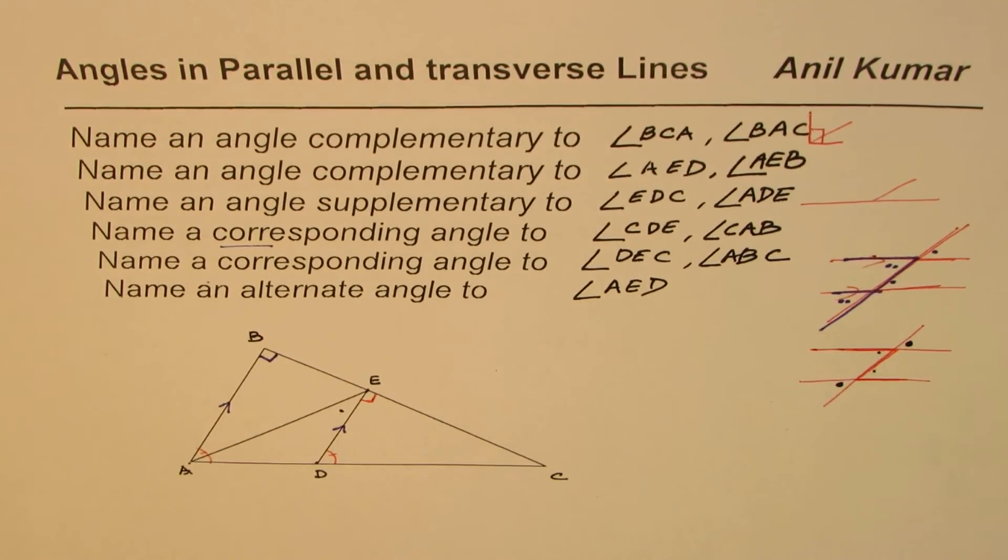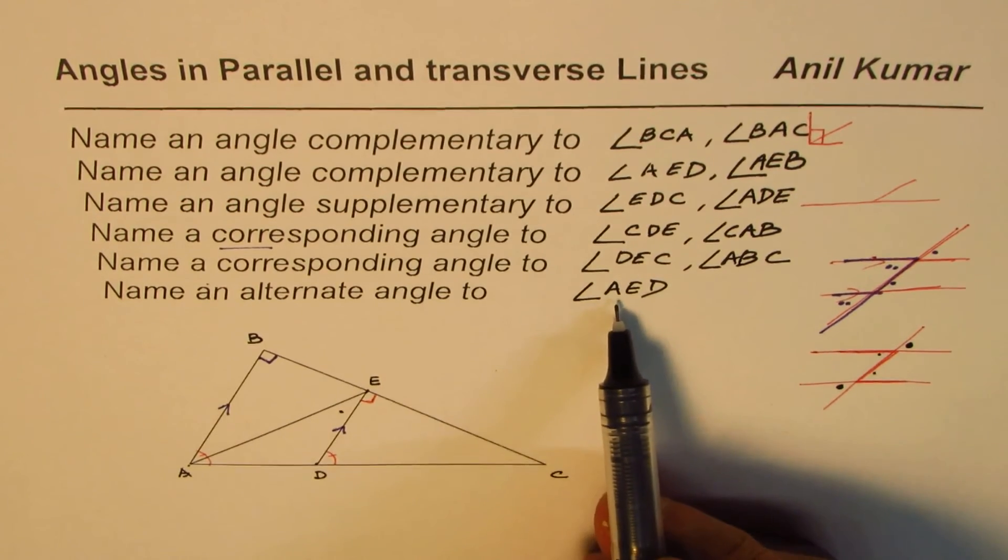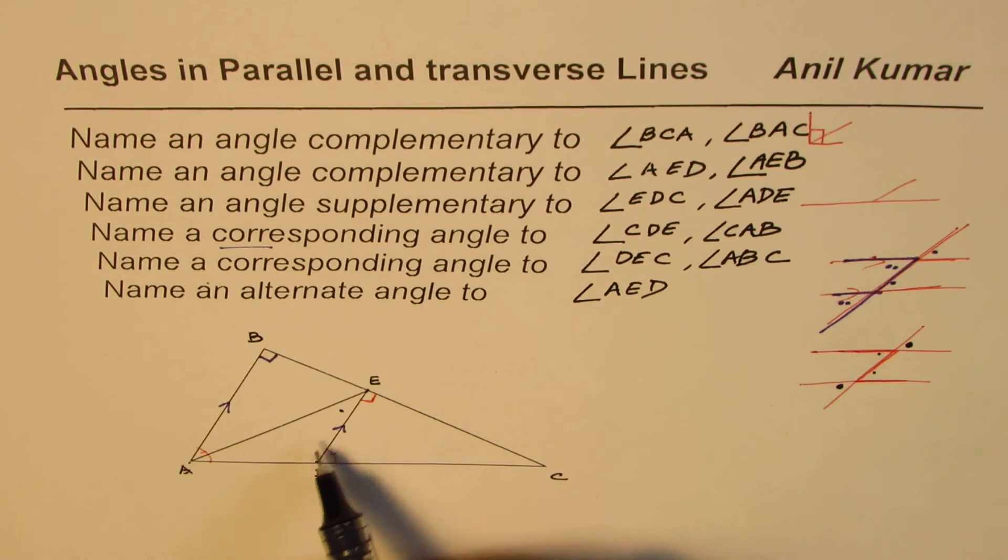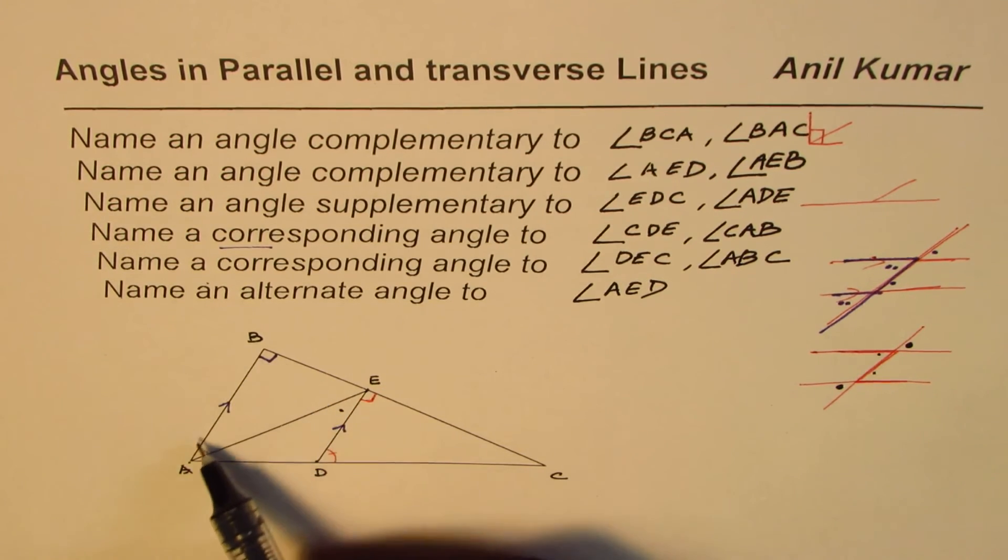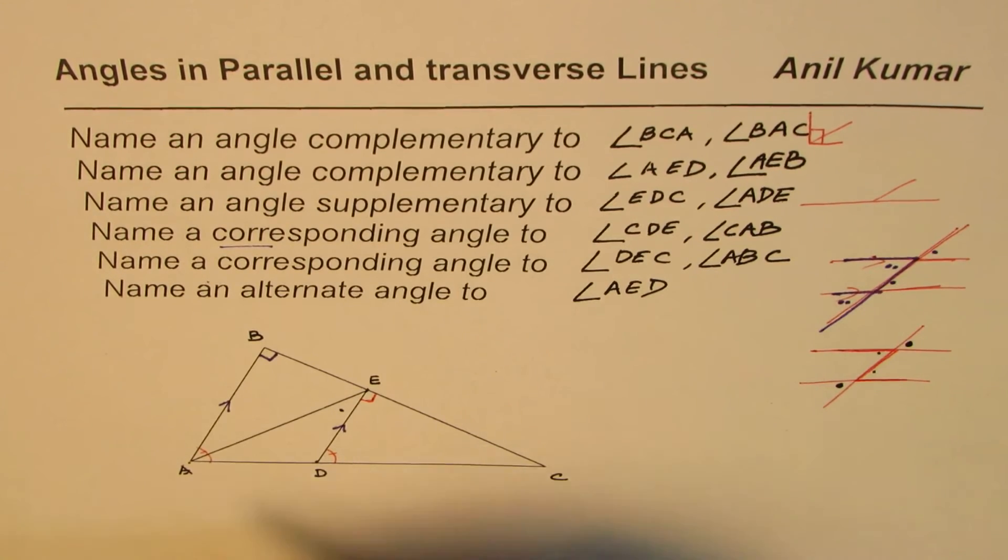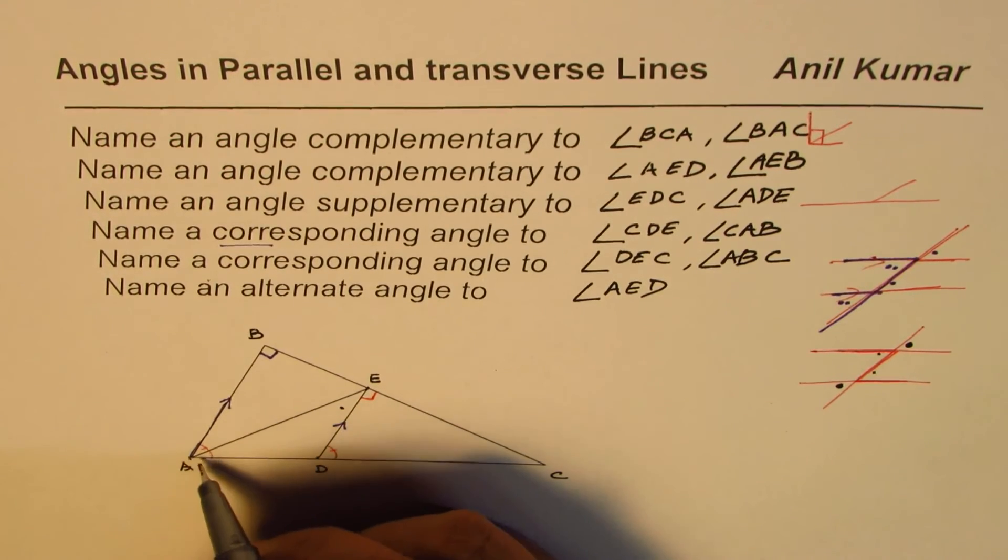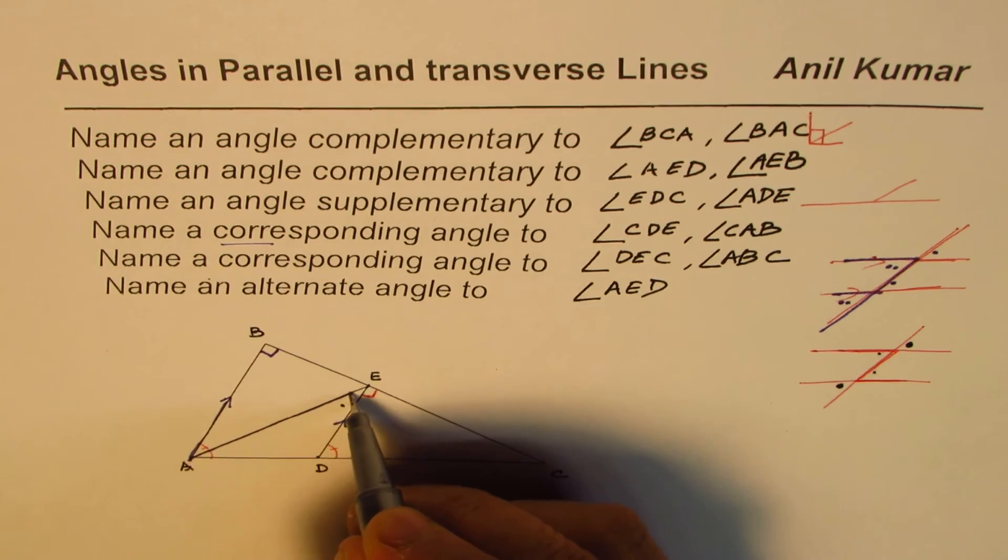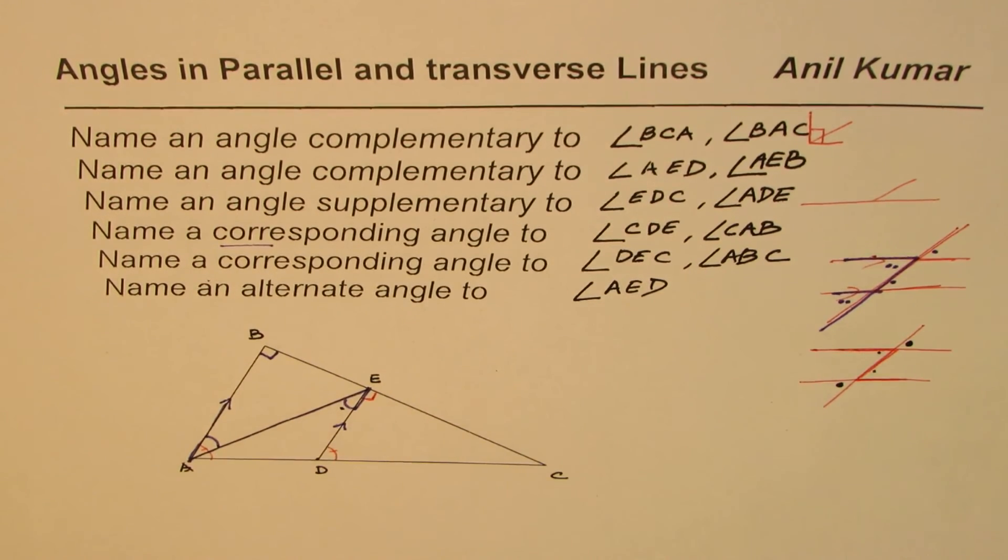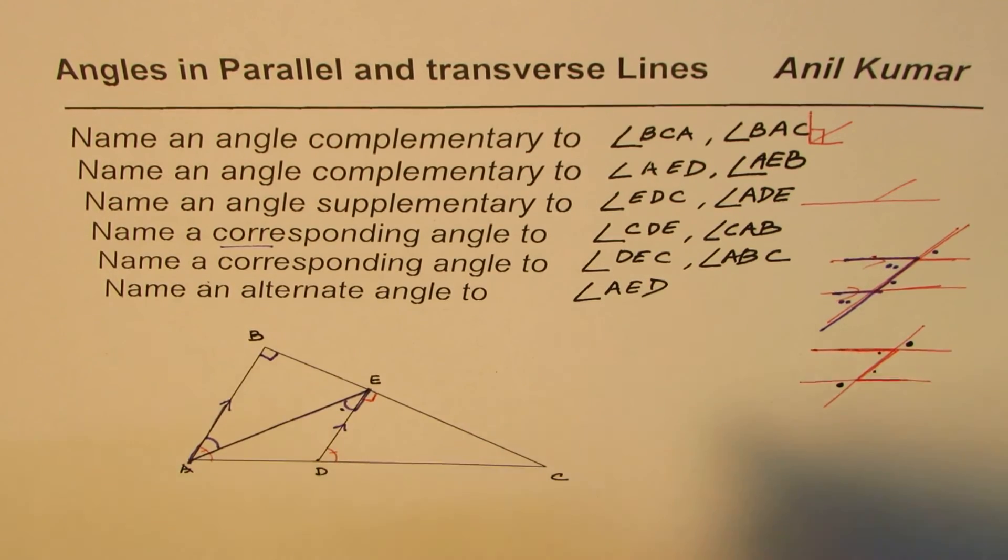Now we are looking into alternate angle to AED. So AED forms a Z pattern right. These two are parallel lines, so these two are parallel lines. So as you can see, the Z pattern is right there. So this angle and this angle are equal, is that okay. So that means angle BAE.